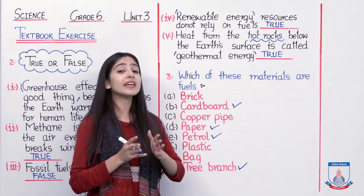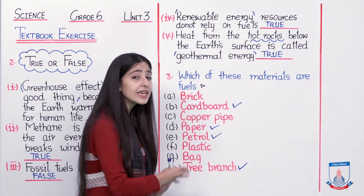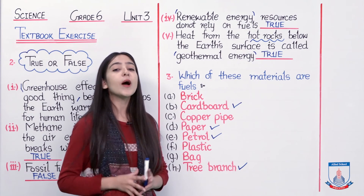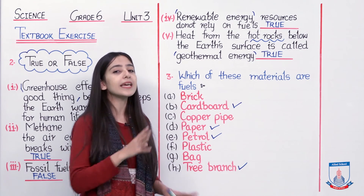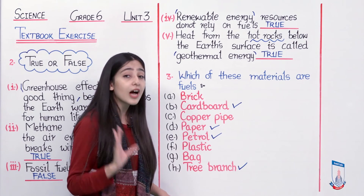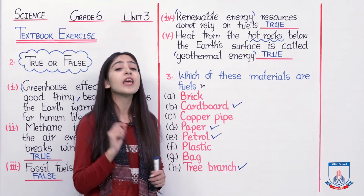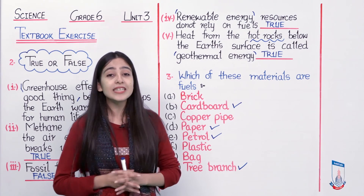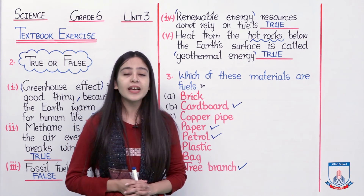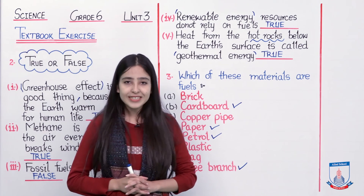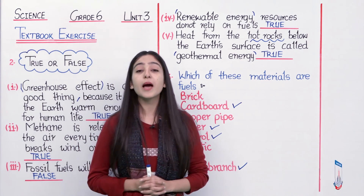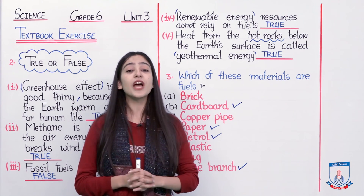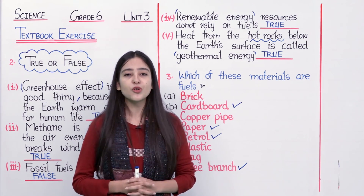These plant-based materials — cardboard, paper, and tree branches — are actually wood written in different shapes, so don't get confused. I hope these concepts are clearly understood and your answers are noted in your textbook. In today's lecture we solved question number 2 and question number 3. We will see you in the next lecture where I will solve the remaining questions. Until next time, take care!